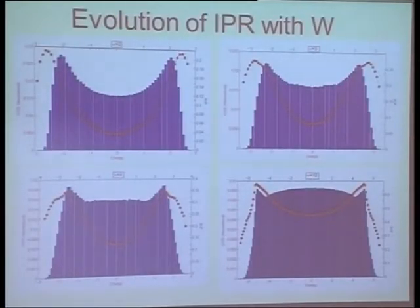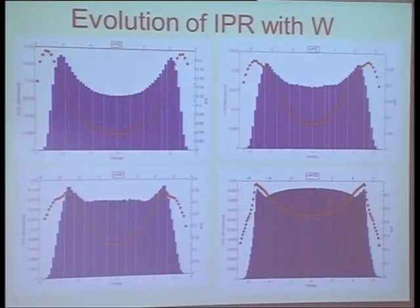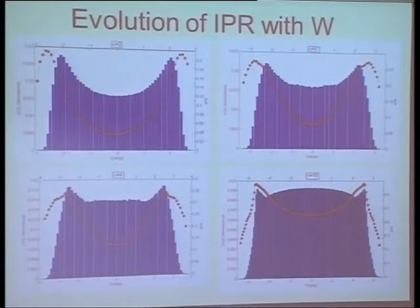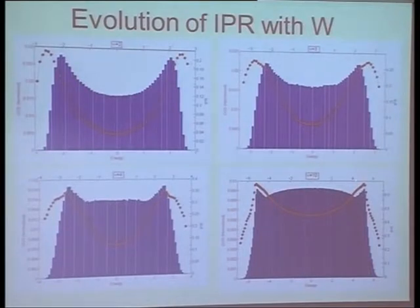If you look at the data as a function of W, the red is the inverse participation ratio and the blue is the density of states. There are very few states once you go beyond the curve, but at the place where we find this peculiar behavior beyond W/2, the density of states is of order 1 — not exponentially small. So this physics is continuing all the way up till there.